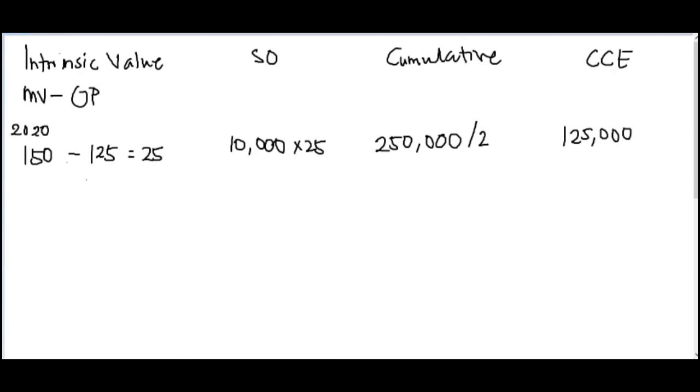For 2021, the same, find the market value. The market value in 2021 is 180 minus your option price which doesn't change. Then you'll have 55 as the intrinsic value. Multiply by your options, times 10,000. You'll have a total of 550,000. Cumulative of 2 years, meaning inside the 550,000 is the 125,000, you deduct it. Minus 125,000. So what comes out, for 2021, your compensation expense is 425,000.